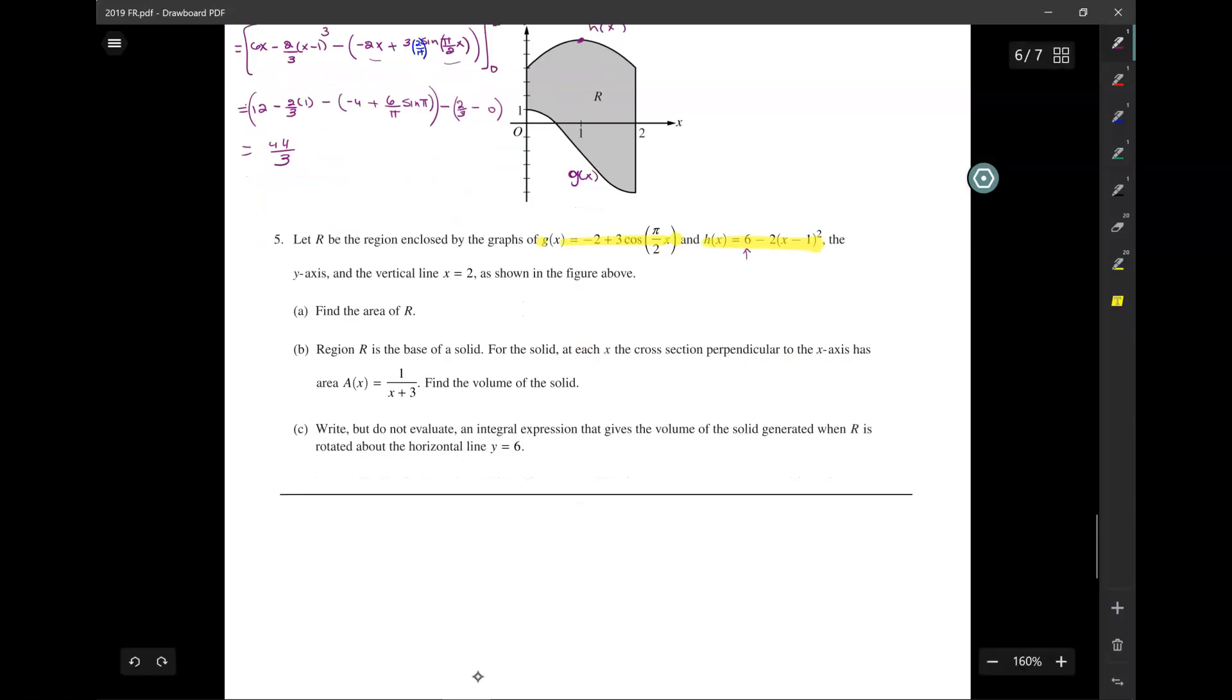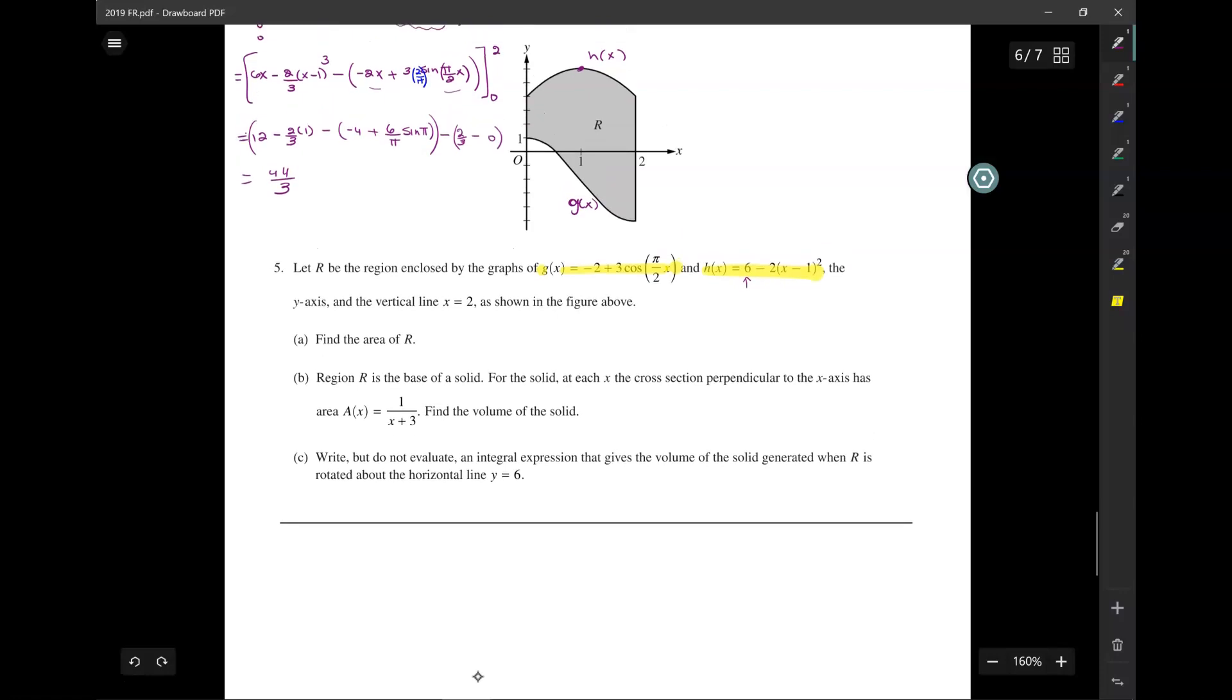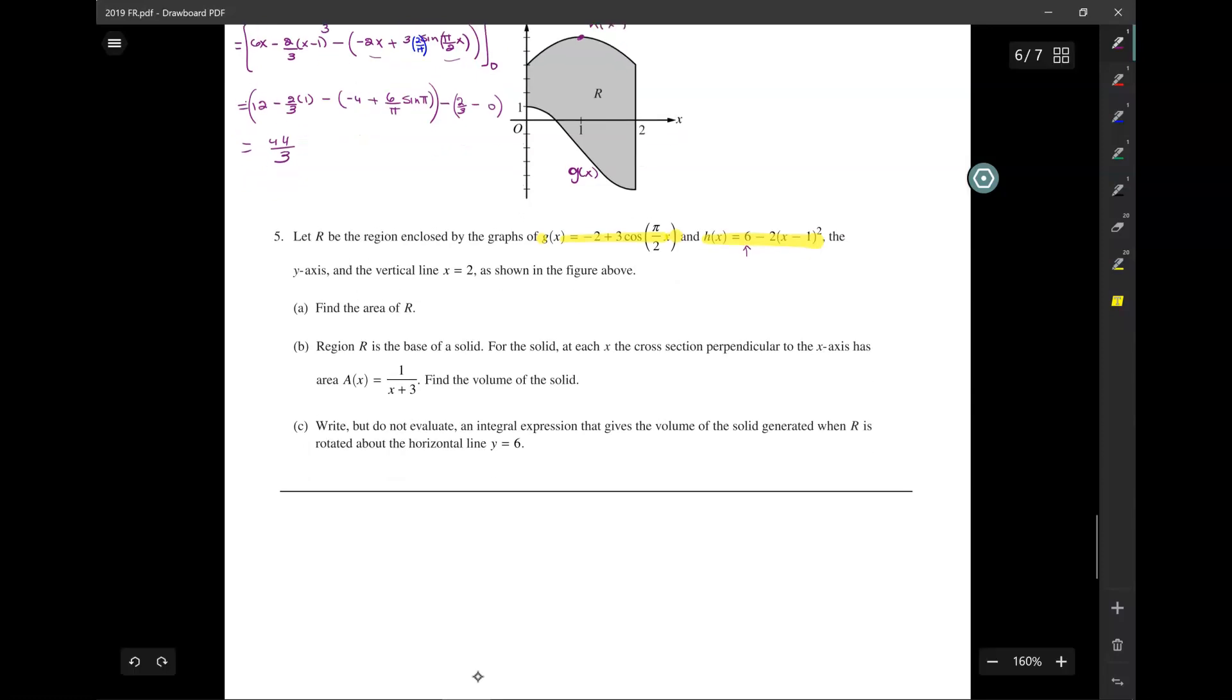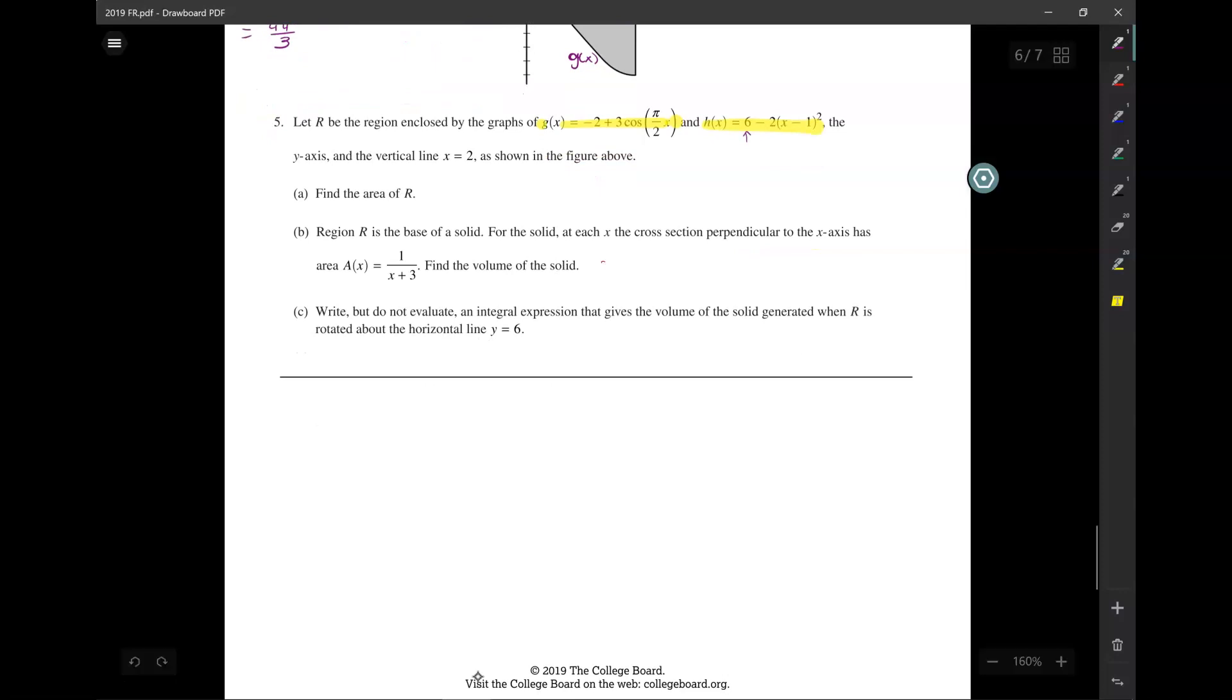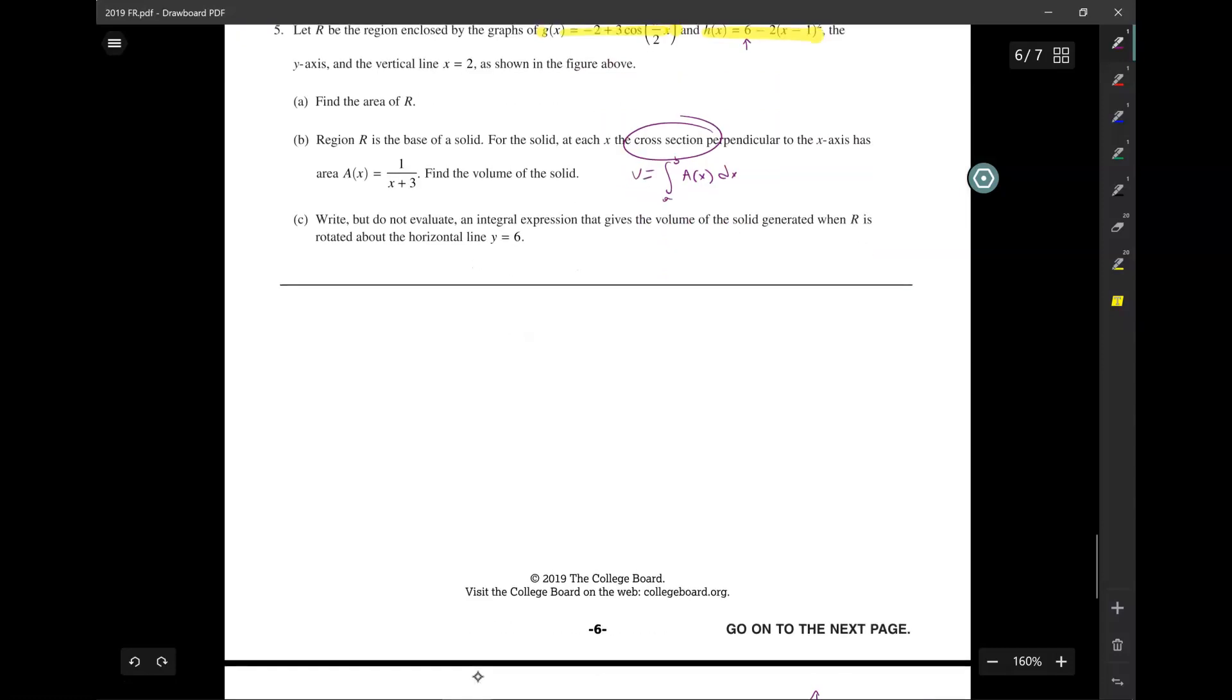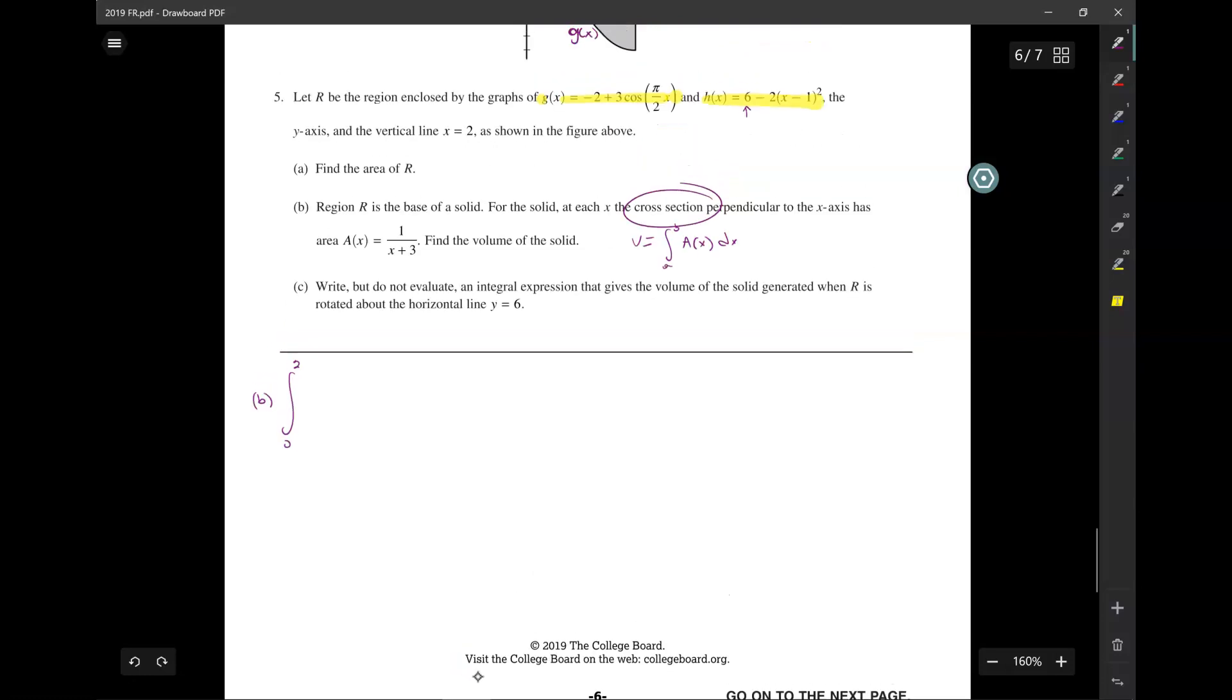B says the region R is the base of a solid. For the solid, at each cross-section perpendicular to the x-axis, it has an area of 1 over x plus 3. Find the volume of the solid. So this is volumes by cross-sections. And remember, how do we find volume by cross-section? It's just the integral from a to b of a of x dx. So for part b here, it'll be the integral from 0 to 2 of a of x dx.